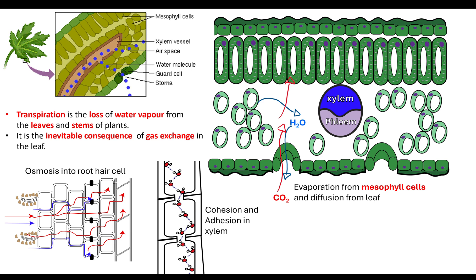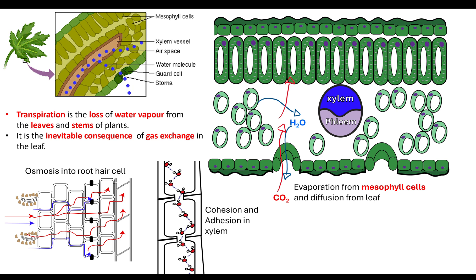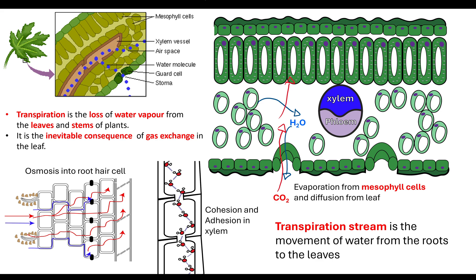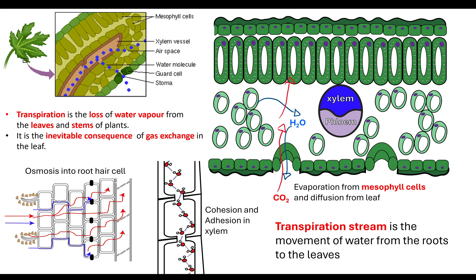The adhesive property involves hydrogen bonds between the wall of the xylem vessel and the water molecules; cohesive properties exist between water molecules themselves. These factors result in what's known as the transpiration stream — the movement of water from the roots all the way up the xylem vessel to the leaves. Transpiration is the loss of that water from the leaves as water vapour out of the stomata.